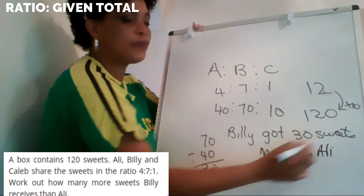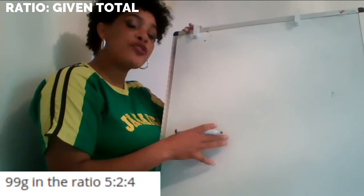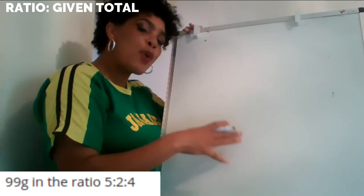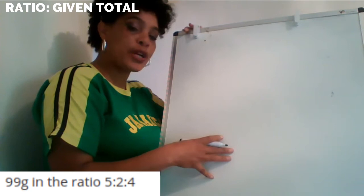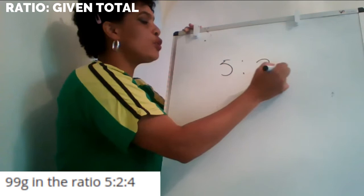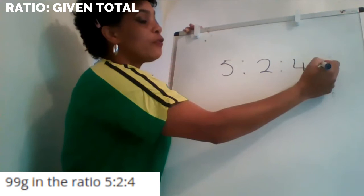Now I'd like you to pause this video, have a go at the question and come back and check if your answer is right. Let's see what the answer says. So five to two to four: five plus two is seven, and seven plus four is 11. So I'm sharing into 11 parts.